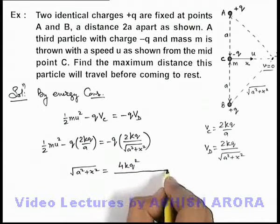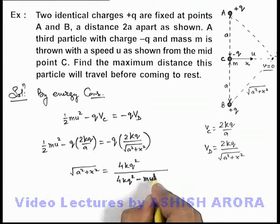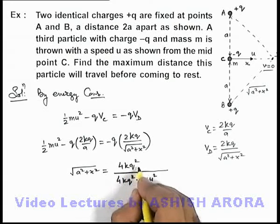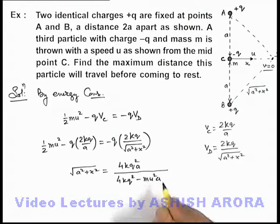divided by 4kq² - mu². You can also multiply this a, so it will be 4kq²a divided by 4kq² - mu²a.